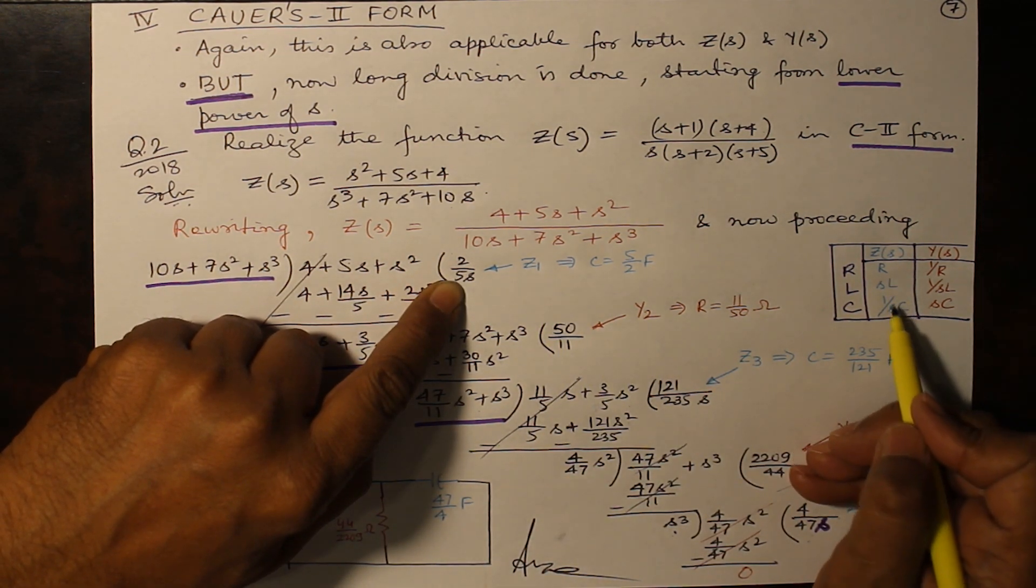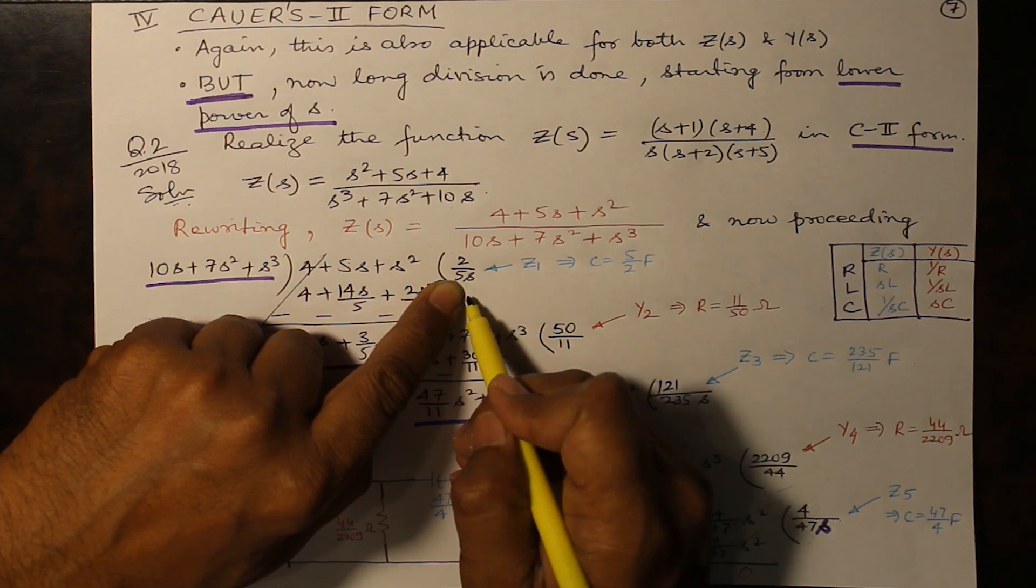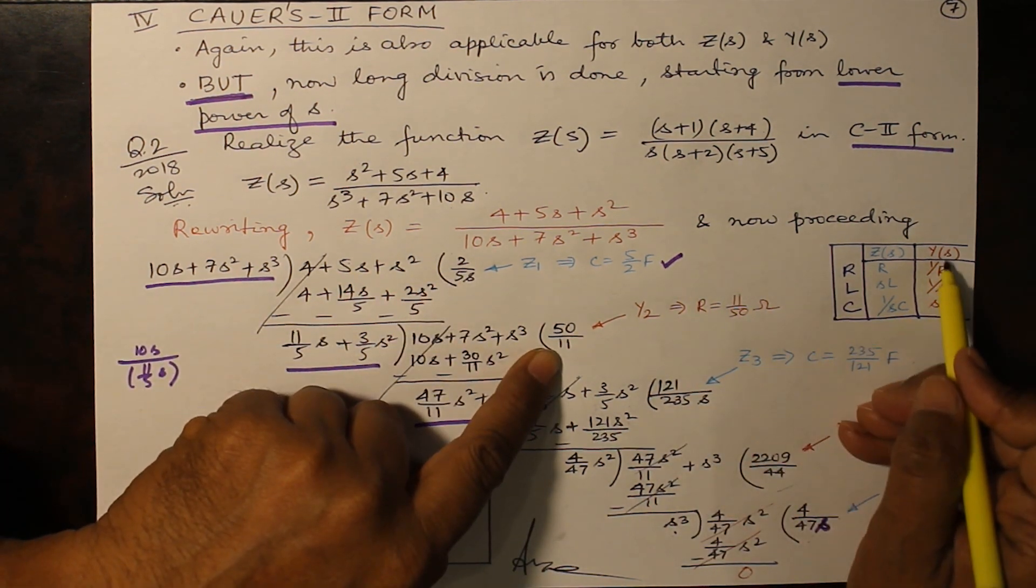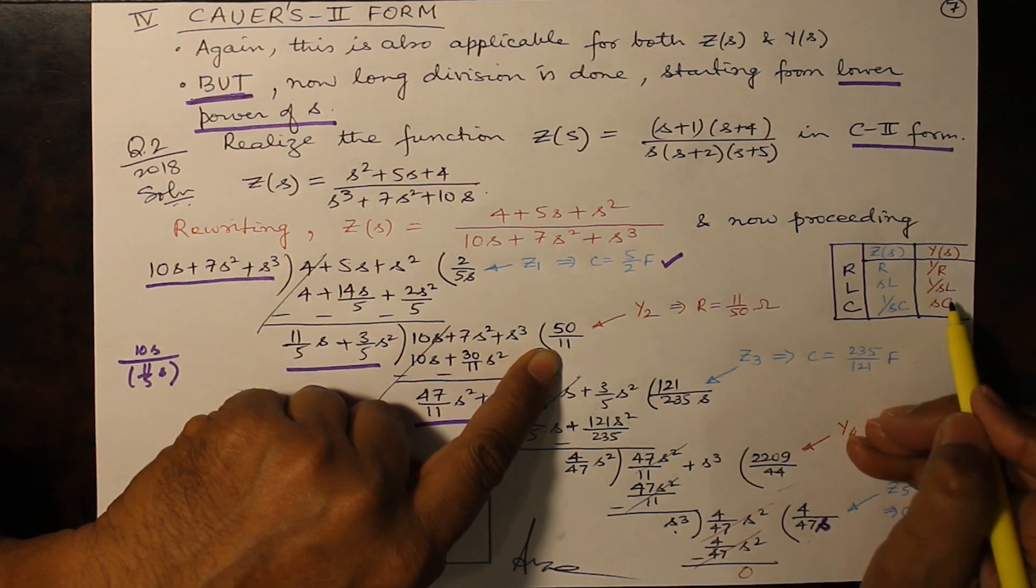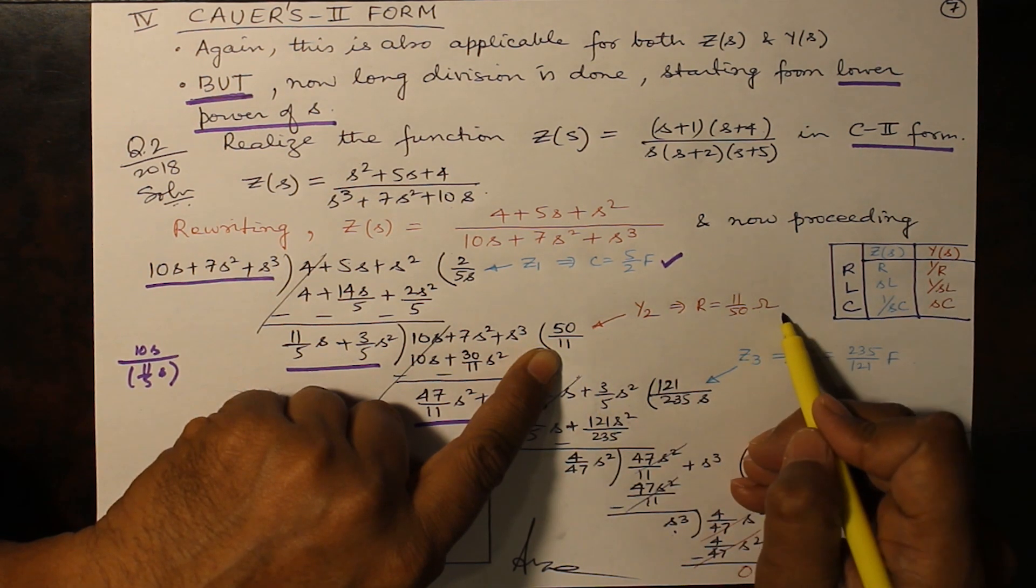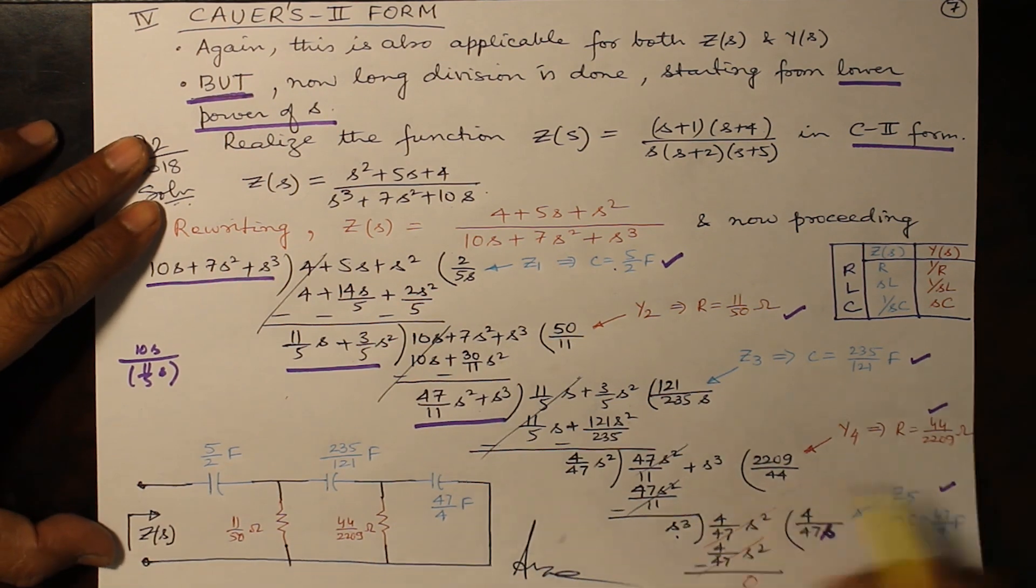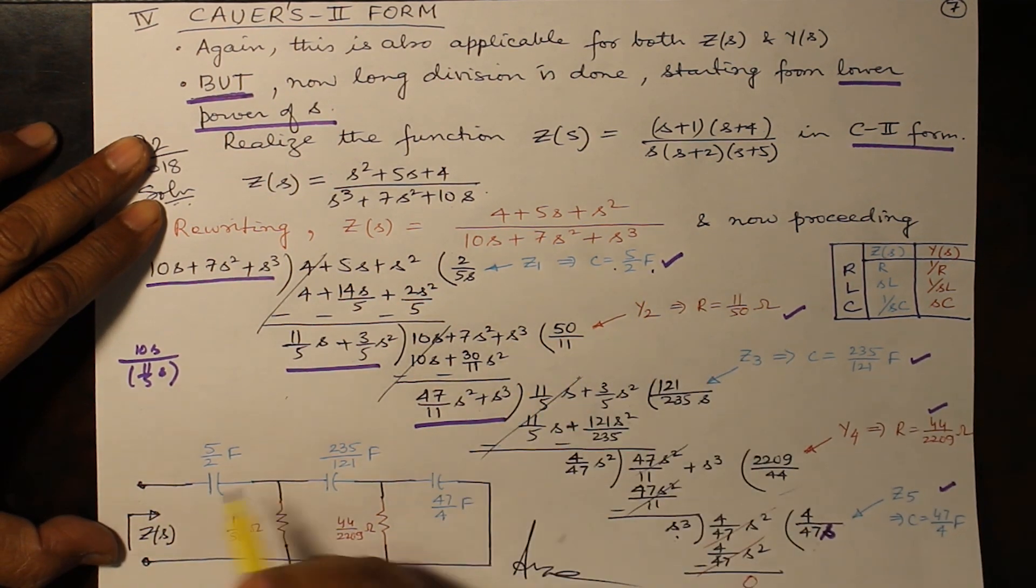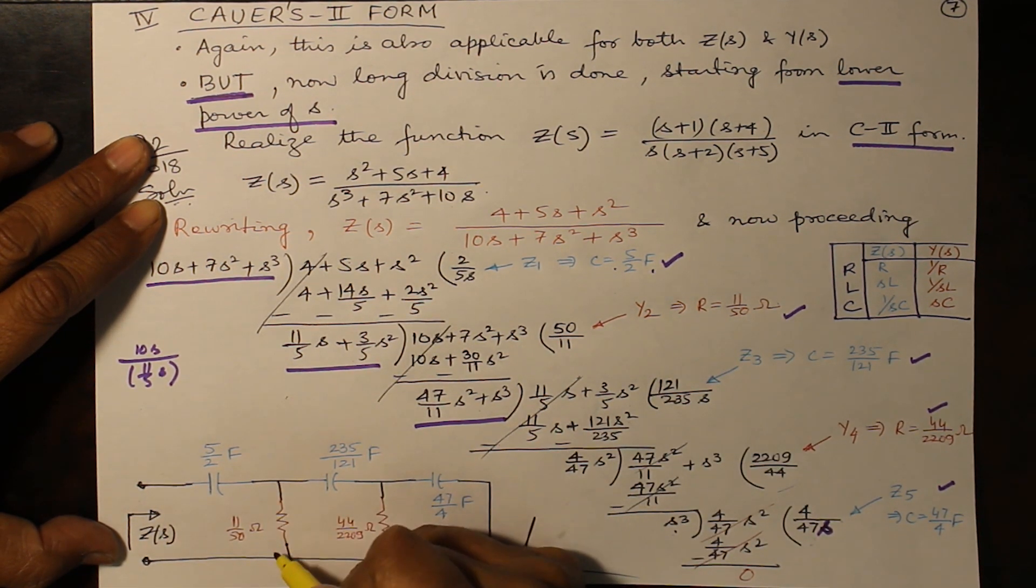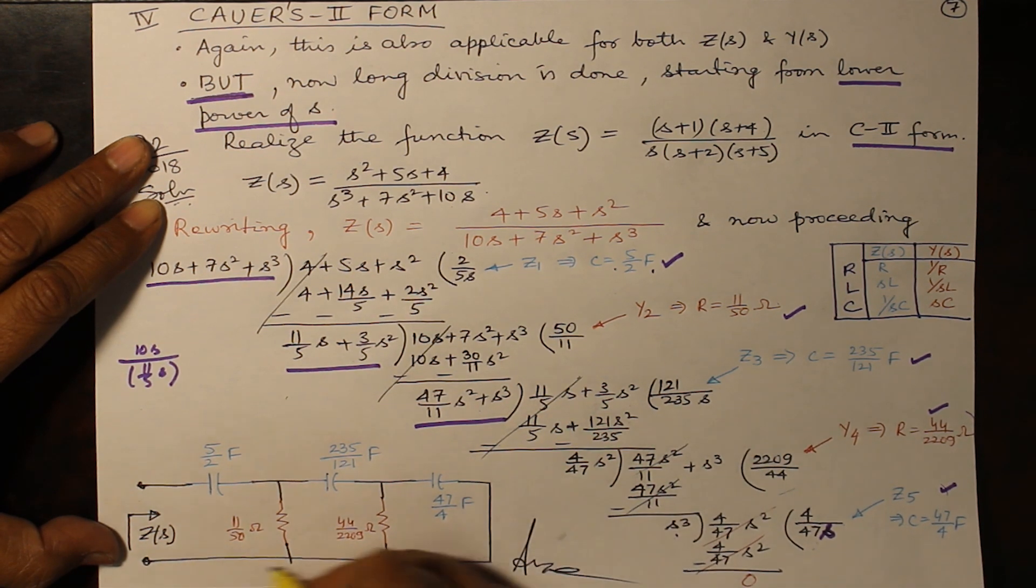Z1(s) is 2 by 5s, so impedance 2 by 5. Y2(s) is 11 by 50. You have a parallel branch, series branch, parallel branch, series branch, and continue this to complete your Cauer's II form.